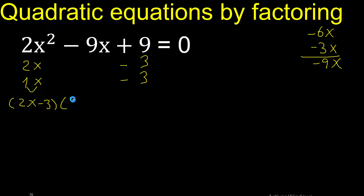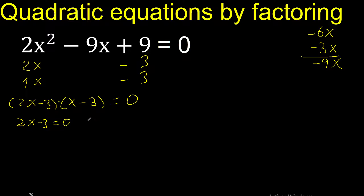1 multiplied by x is x minus 3. Equal 0 multiplication. Therefore this equals 0, or this equals 0.